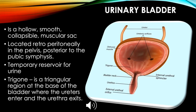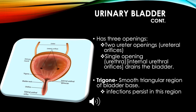The urinary bladder is a hollow, smooth, collapsible muscular sac located retroperitoneally in the pelvis, posterior to the pubic symphysis. It is a temporary reservoir for urine. The trigone is a triangular region at the base of the bladder where the ureters enter and the urethra exits. The bladder has three openings: two ureteral orifices and one internal urethral orifice that drains the bladder. Infections tend to persist in the trigone region.